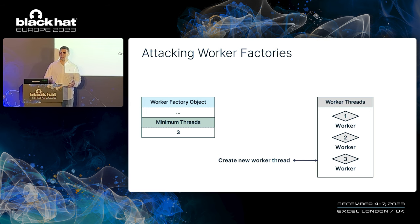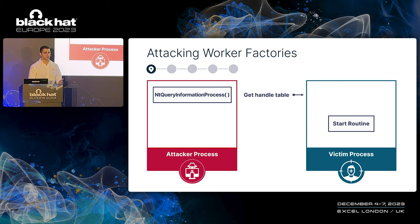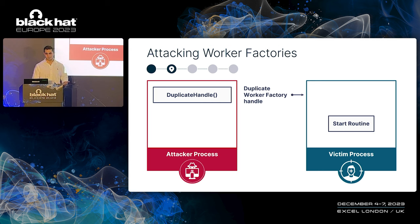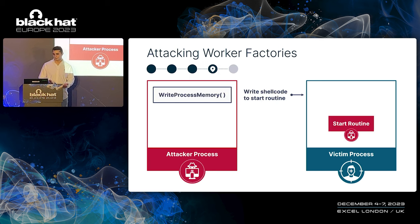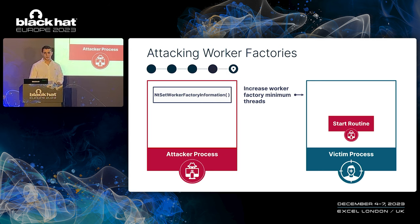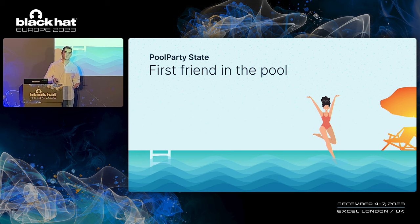Let me show you the first brand-new and fully undetectable process injection technique of the day. We start off by getting the handle table of the target process using the NtQueryInformationProcess system call. We iterate over the handle table to locate the worker factory handle. Once we find it, we duplicate it. Given access to the worker factory of the target process, we query basic information, and using the information obtained — which includes the start routine — we write shellcode to the start routine of the worker factory. All that is left is to trigger the malicious start routine by setting the minimum worker threads number. We now have our first friend in the pool party.